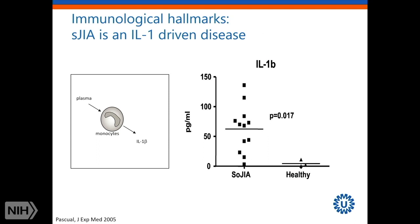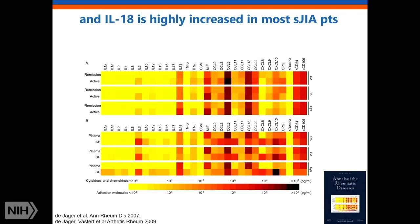So what are the immunological hallmarks of this disease? We heard from Virginia Pascual this morning her beautiful data from 2004 and 2005 that systemic JIA is for sure an IL-1-driven disease, although it is very difficult to measure elevated levels of IL-1 in the disease. She used a stimulation experiment co-culturing systemic JIA patients' cells with healthy control monocytes to show this. Another cytokine is highly increased in peripheral blood of these patients — a cytokine of the IL-1 family — it's IL-18.